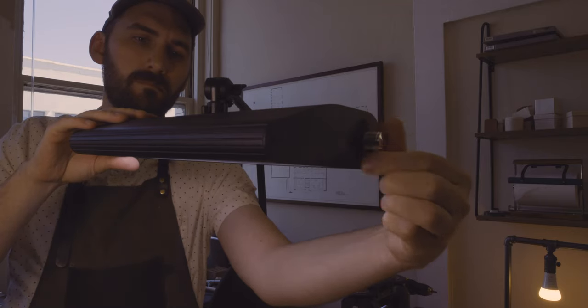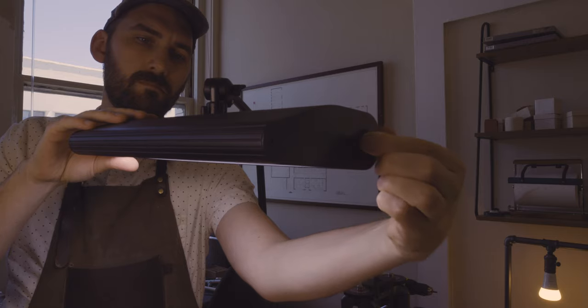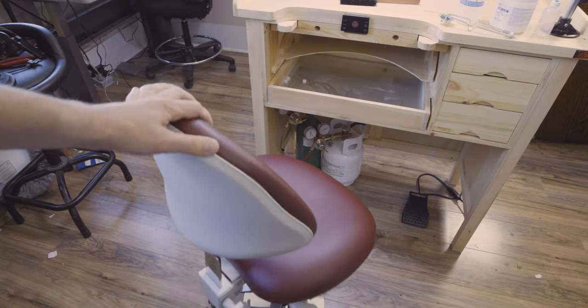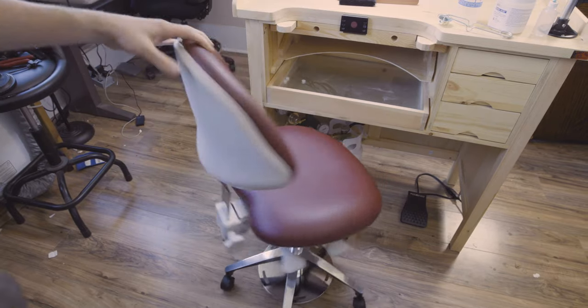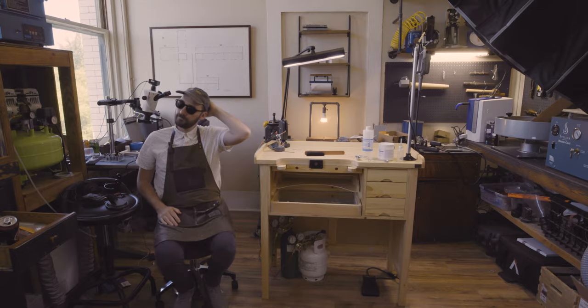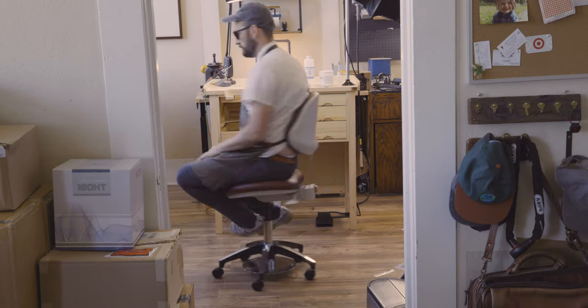A bench lamp works wonders for lighting up your workspace. The lighting on this one is adjustable. Last but certainly not least, when sitting at a bench for long periods of time you'll want to invest in a good chair. This one is height adjustable and glides like a dream.